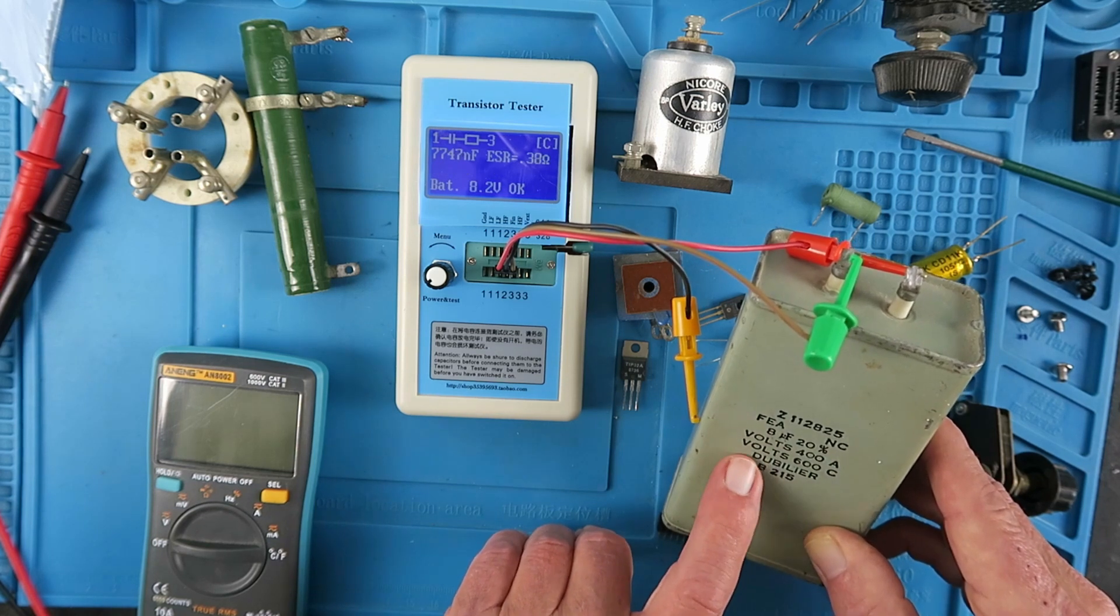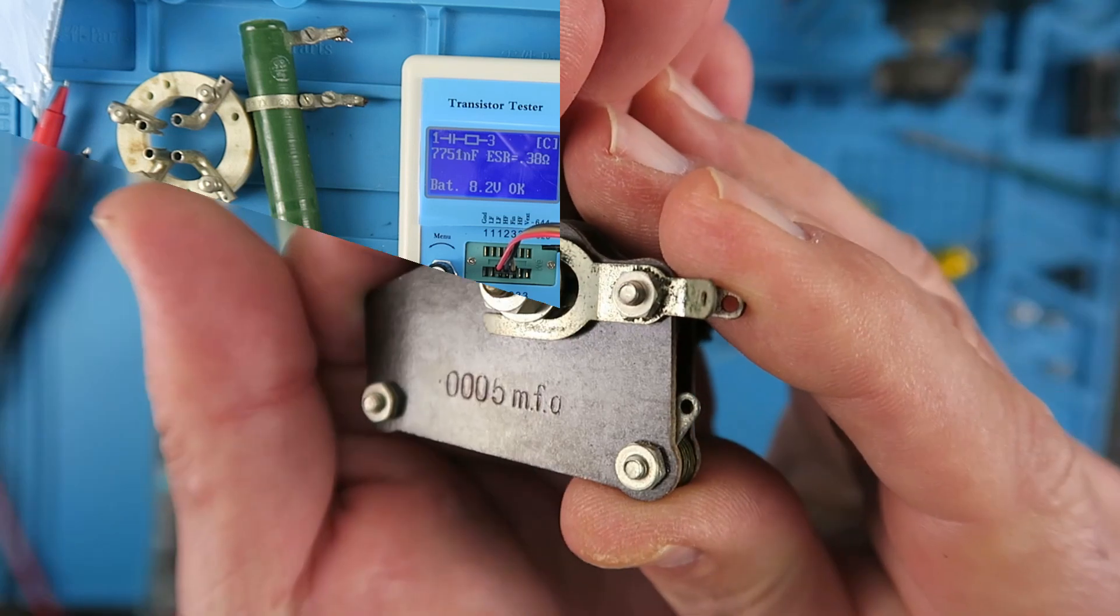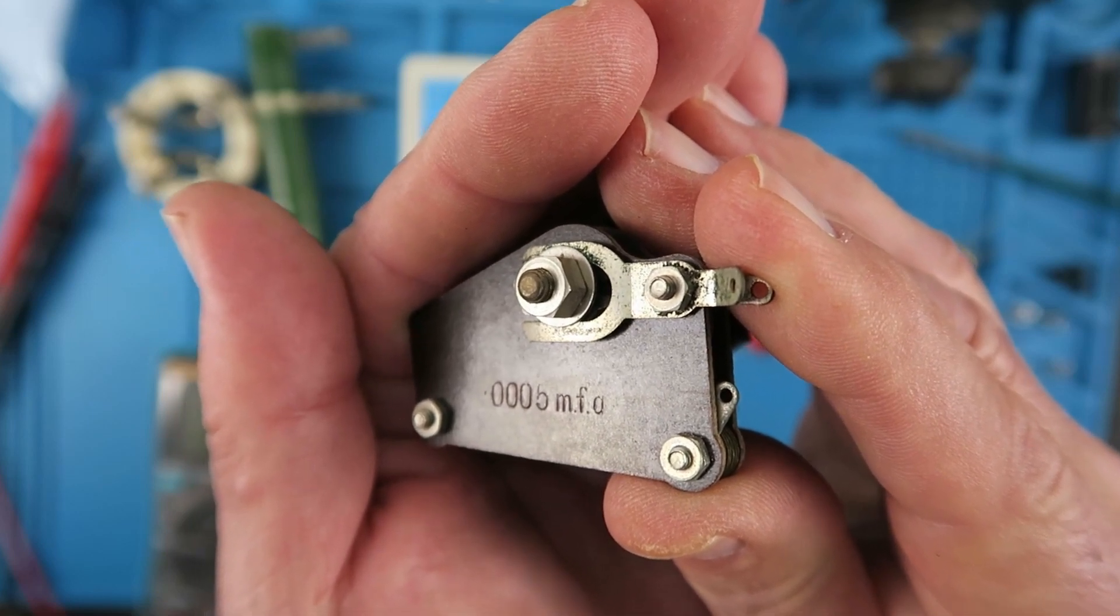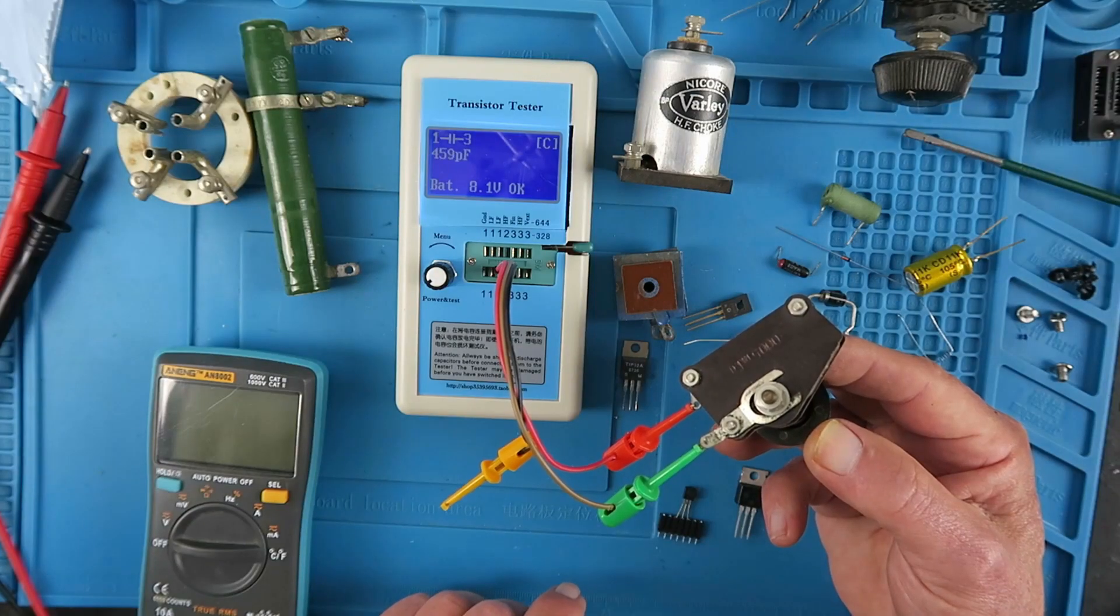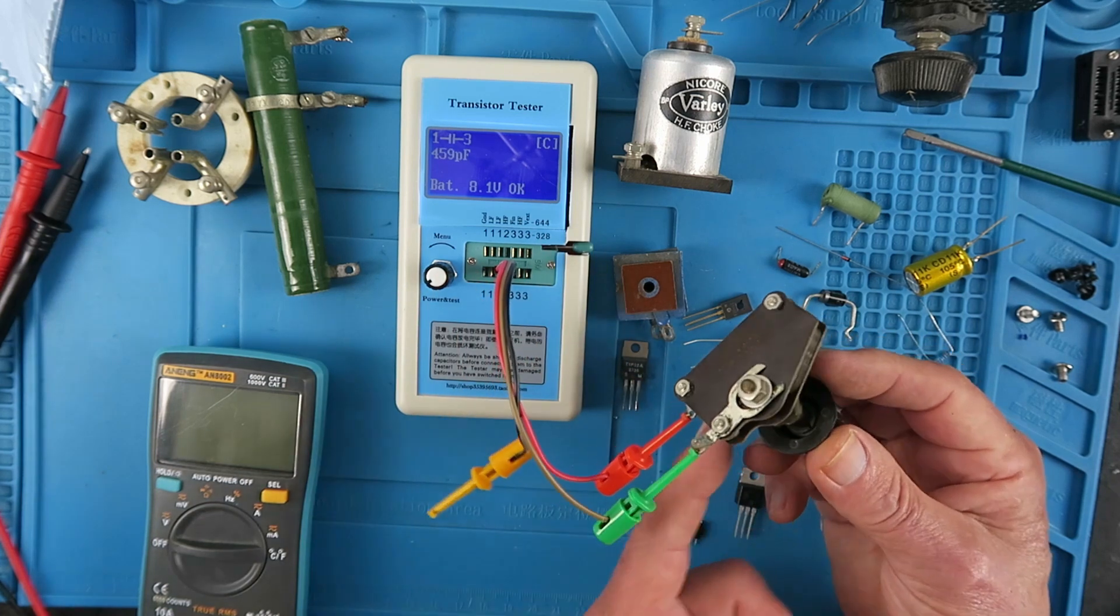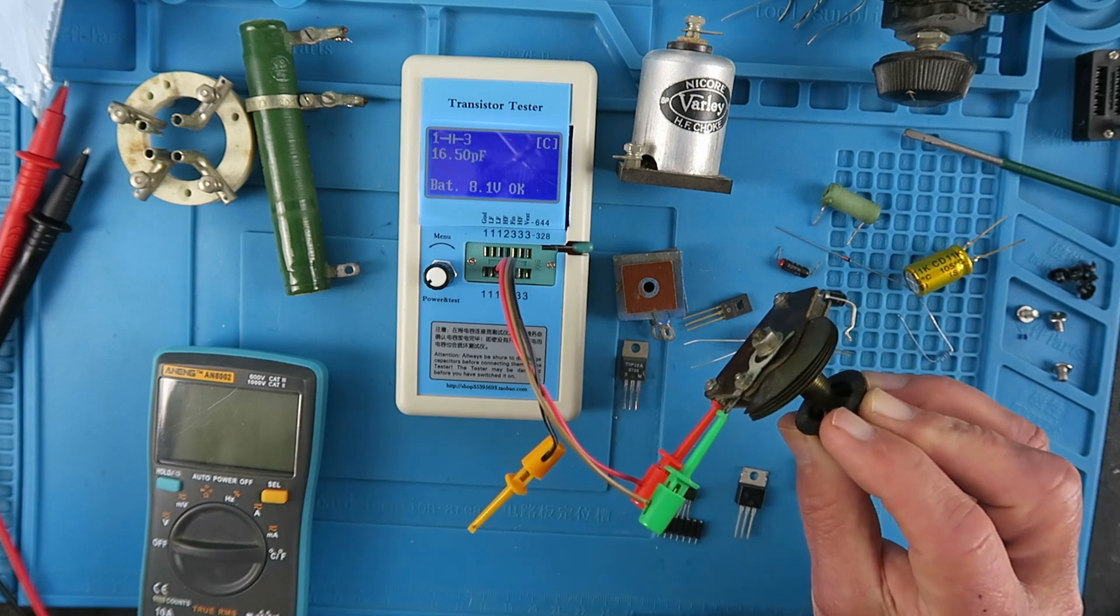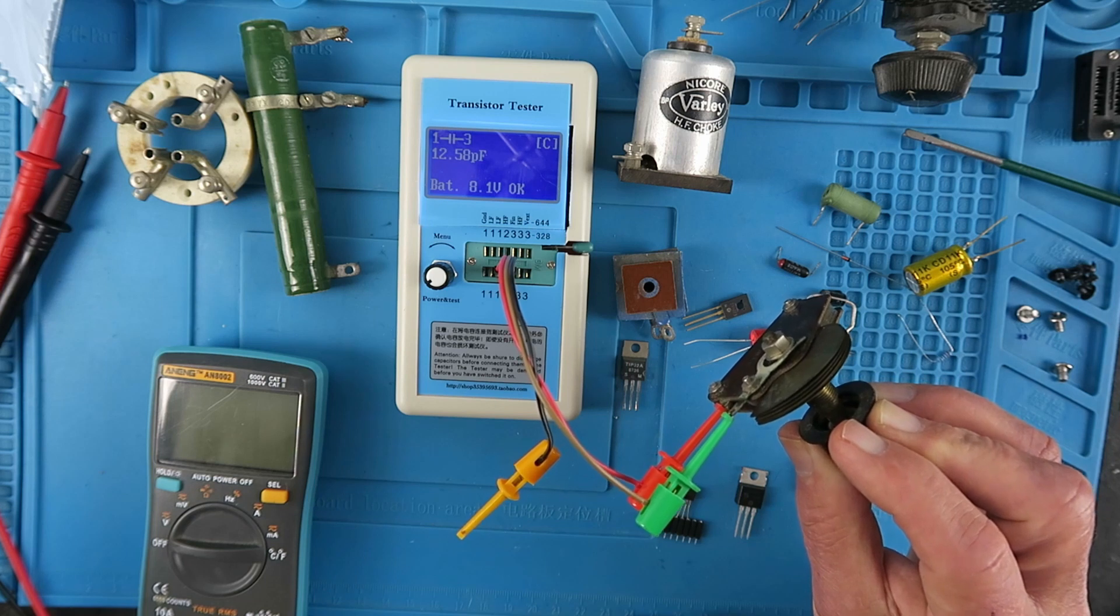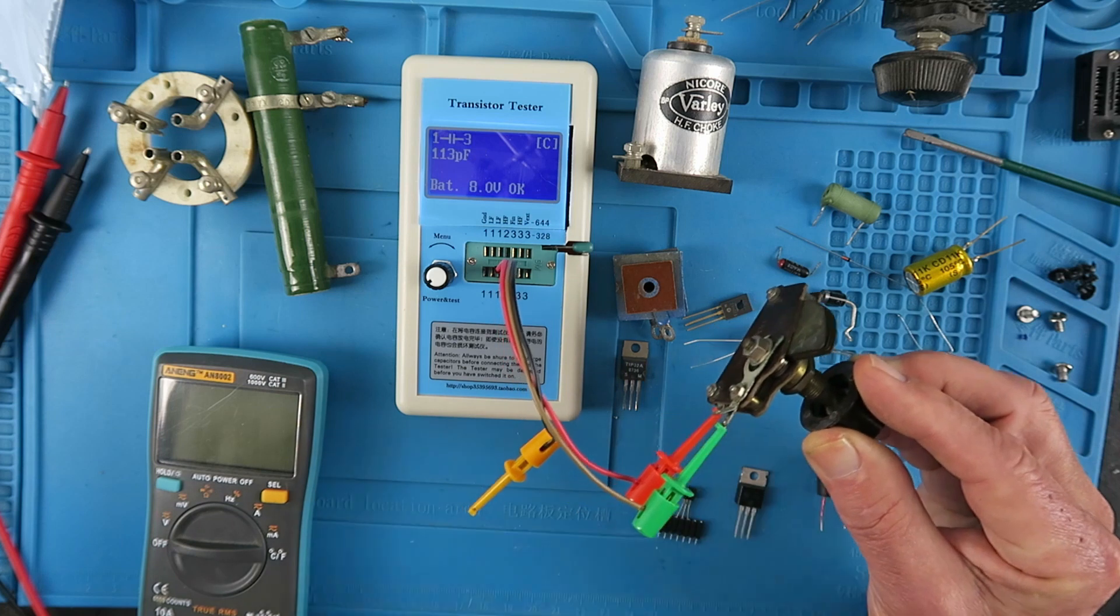Our variable capacitor is similarly marked as 0.0005 microfarads. With all the vanes closed, we're seeing 465 picofarads. If I open the vanes out, we go down to just 12.6 picofarads. So clearly, this is still working perfectly as well.